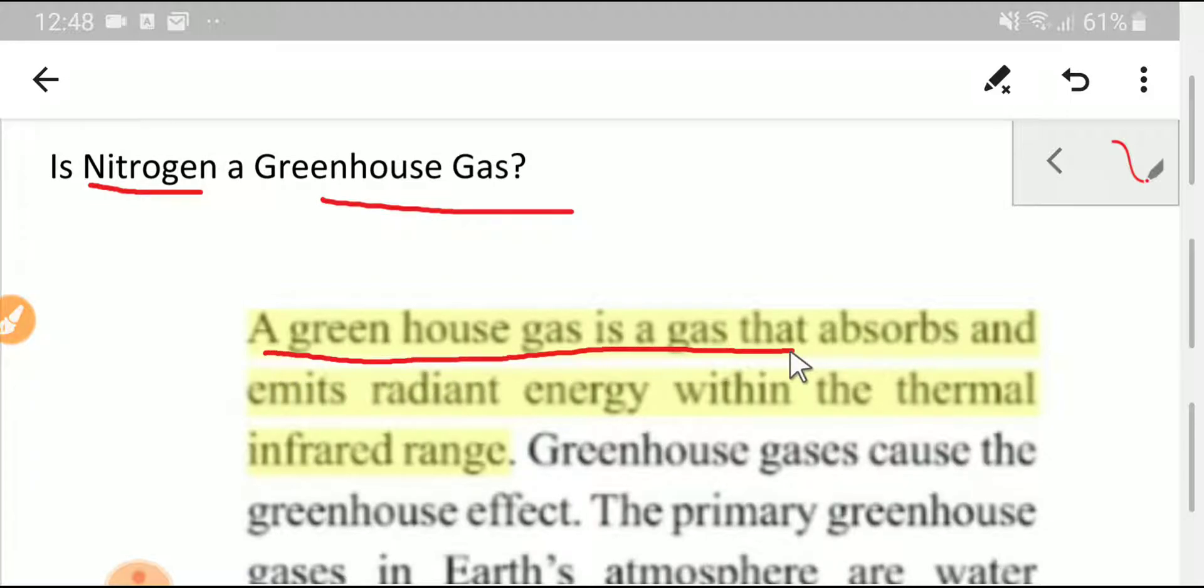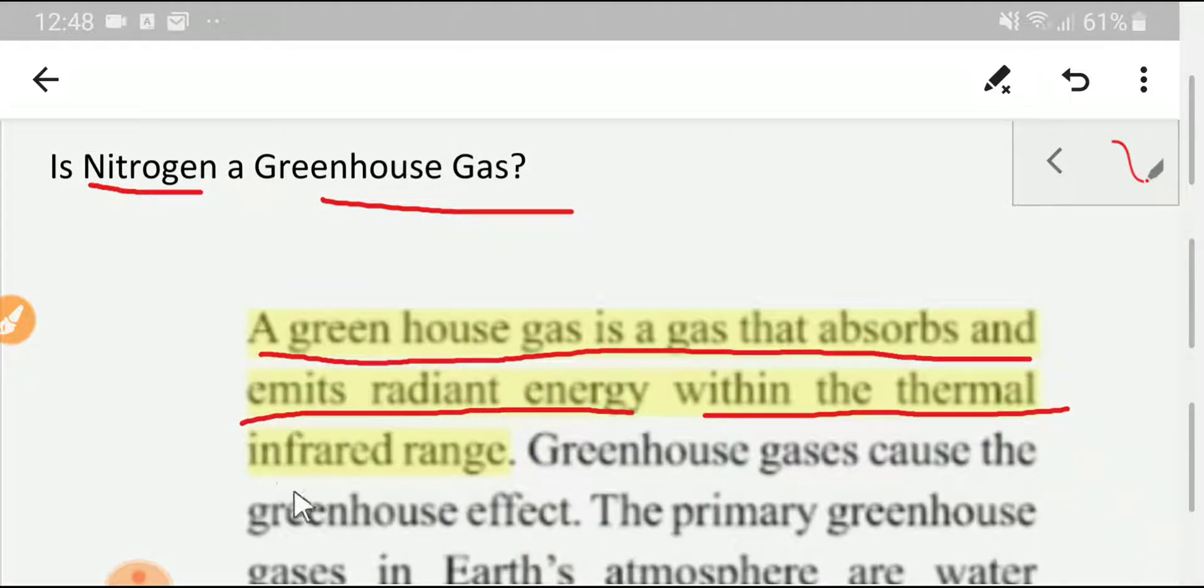A greenhouse gas is a gas that absorbs and emits radiant energy within the thermal infrared range. That is IR radiation. Greenhouse gases function in two ways: they absorb IR radiation and emit some of that radiation.